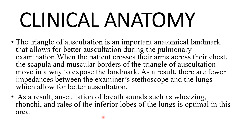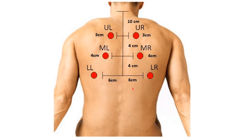We can hear the wheezing sounds, ronchi, and rales of the inferior lobes of the lungs. When you place the stethoscope six centimeters lateral to the midline on the left side, you can identify the lower lobe of the left lung. Six centimeters to the right side, you can hear the lower lobe of the right lung sounds.